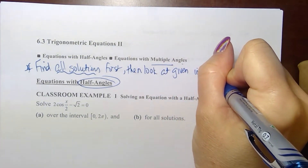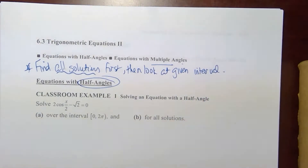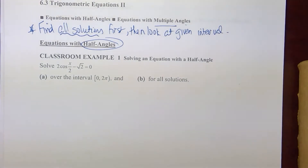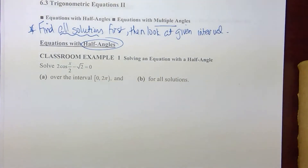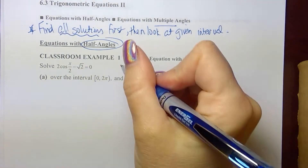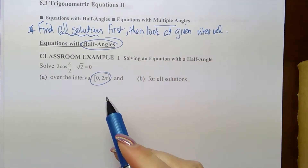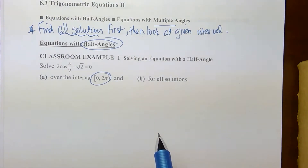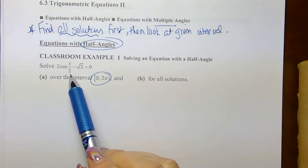We're not going to work through every single problem in the packet because it would take a really long time and a lot of them are repetitious, so I may just give you some answers. We'll go through one on each page slowly and give you answers for the other. The interval we're given is in radians, so we'll give solutions in radians. We start with all solutions, but we begin by solving the equation.